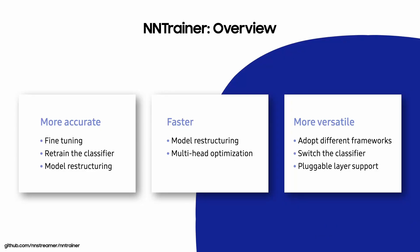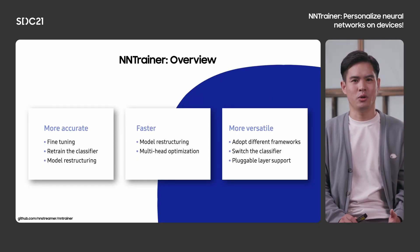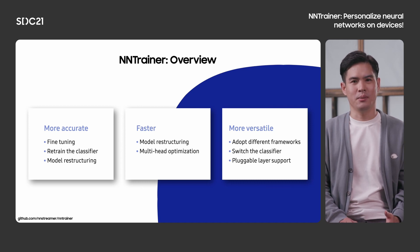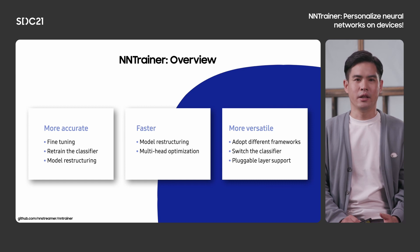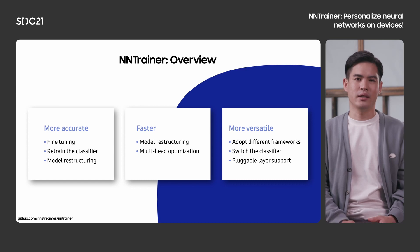Let's summarize what NN-Trainer can do. You can make a model more accurate by retraining the whole or part of the model, while you can optimize the model for performance by restructuring it. And the model can be adapted to different tasks by switching classifiers, or can be used alongside other conventional frameworks.